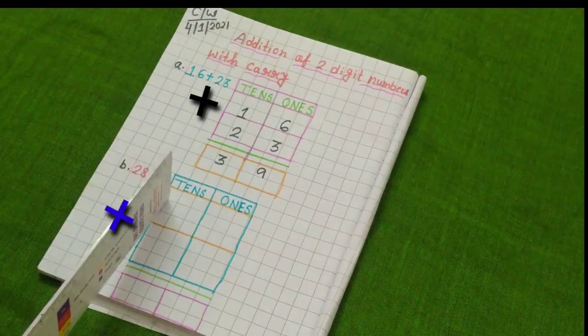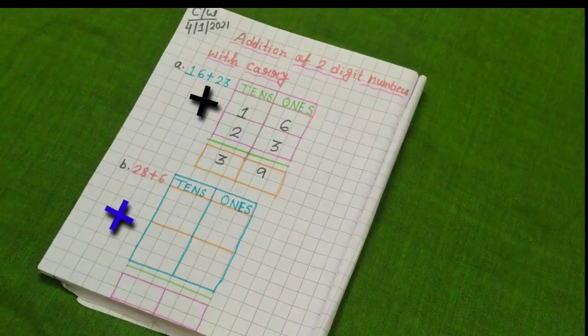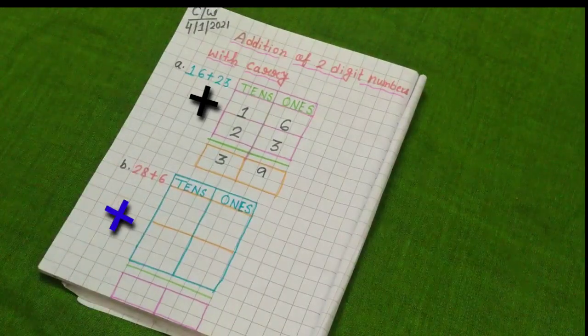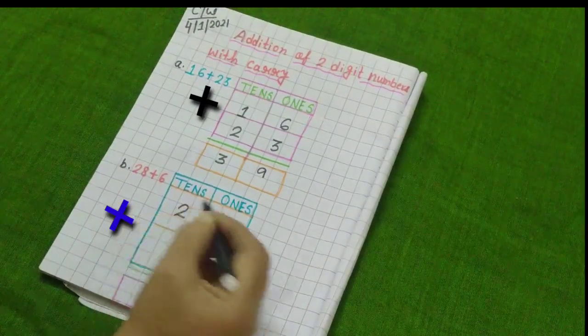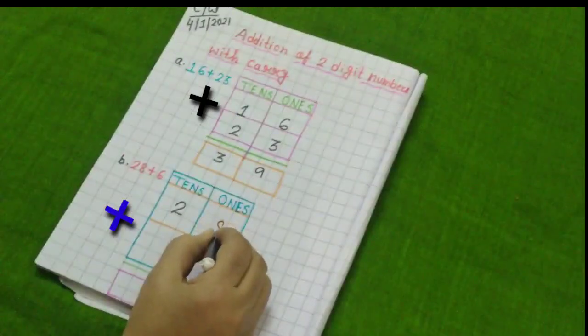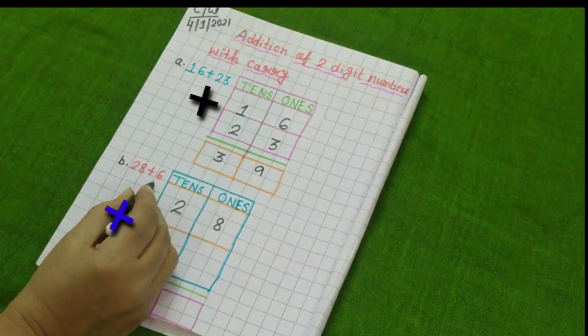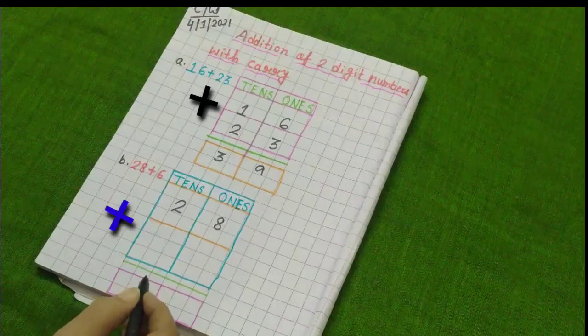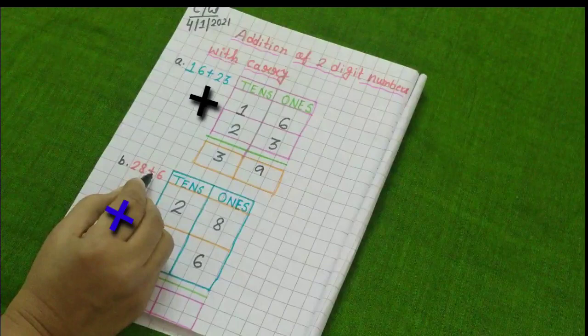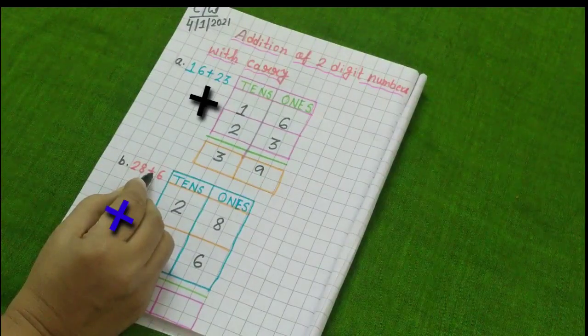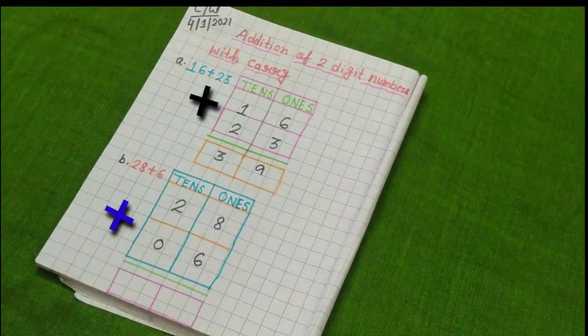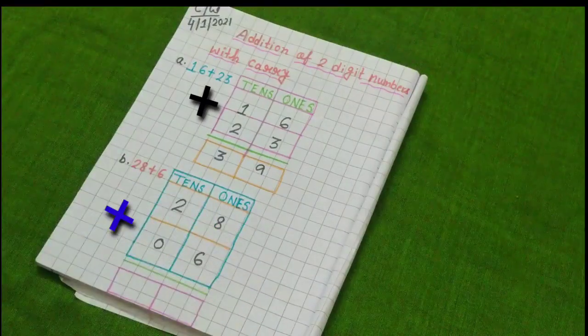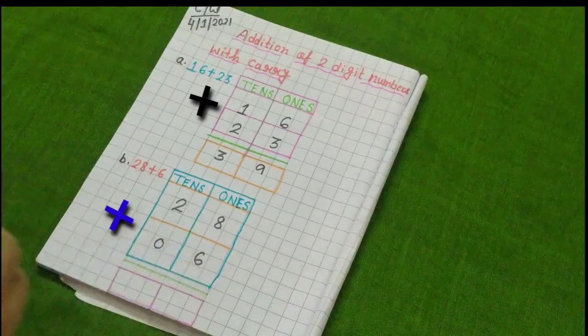Okay. Now, my second addition is 28 plus 6. So, 28 means 2 tens and 8 ones. So, 2 will go in tens house and 8 will go one's house. And 6, 6 is one digit number. So, you have to remember it. And 1 digit number always sits in 1's house. Here, nothing is there. So, nothing means 0. Understood everybody? Now, we will do add first 1's digit number. Okay. Means 8 and 6. Let's start.